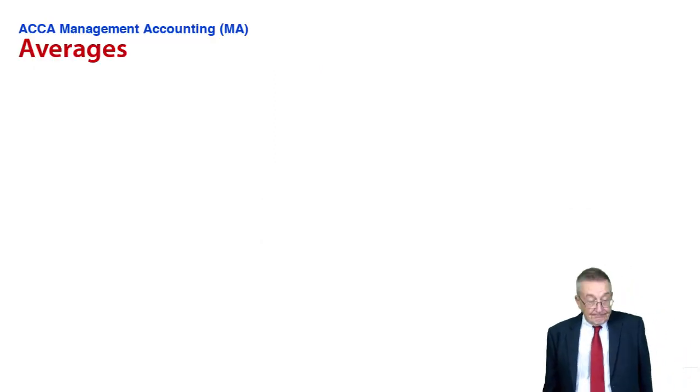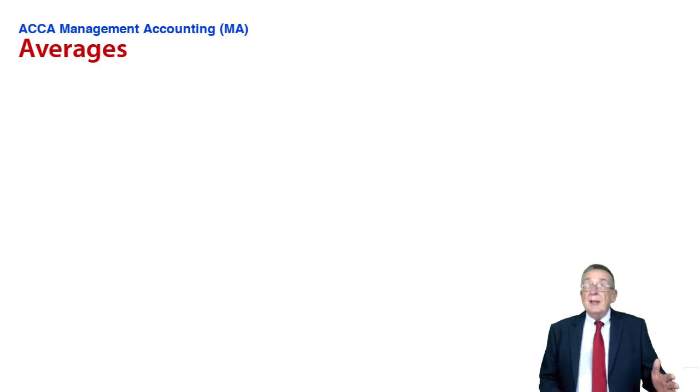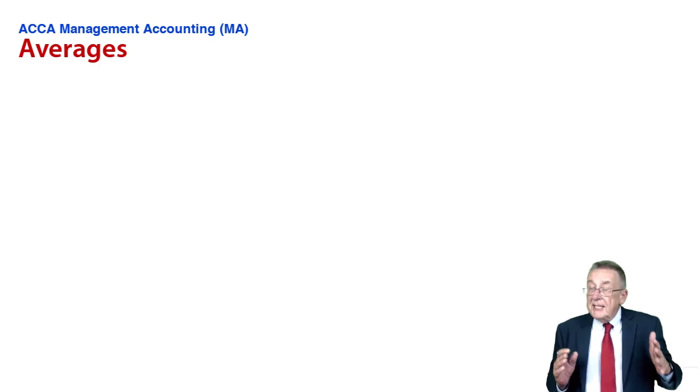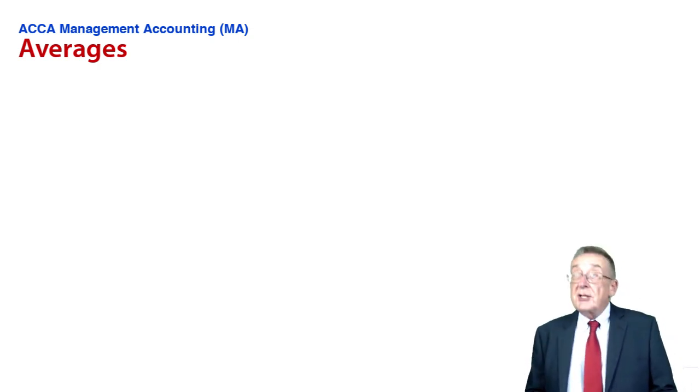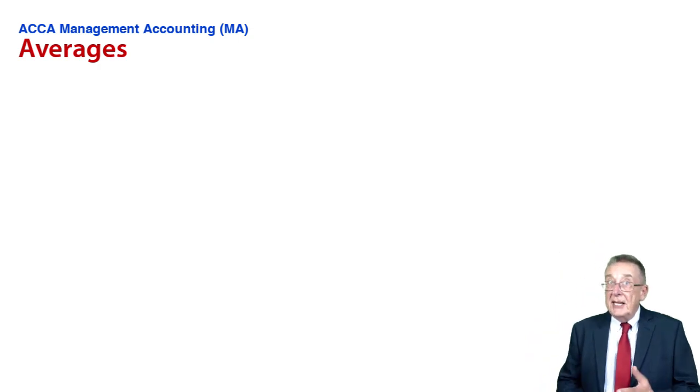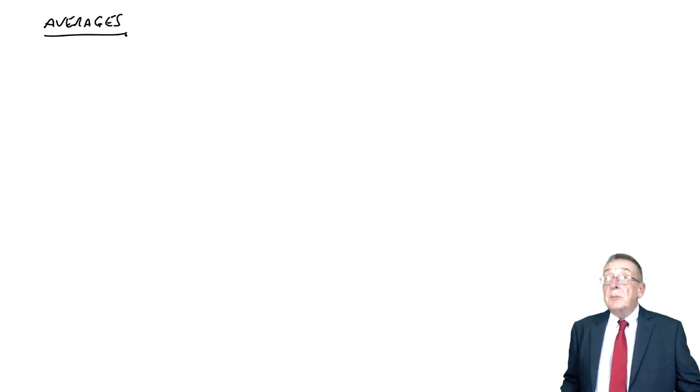All right, in the last lecture we were looking at measures of averages with discrete variables. We're going to look at the same measures of average - arithmetic mean, median and mode - but this time for example three, where we've got continuous variables.